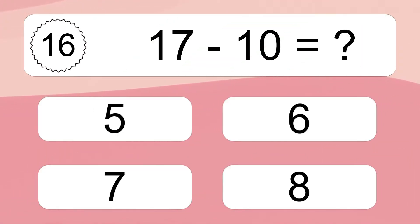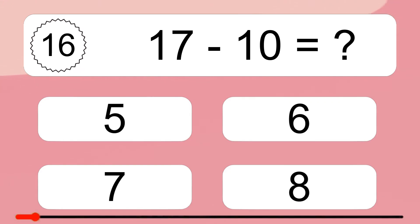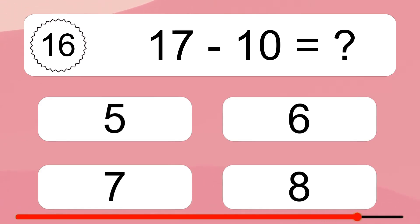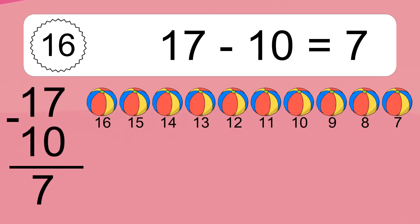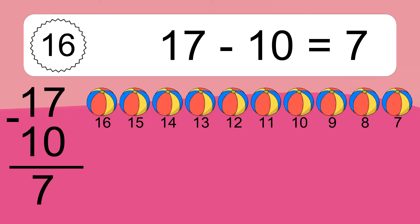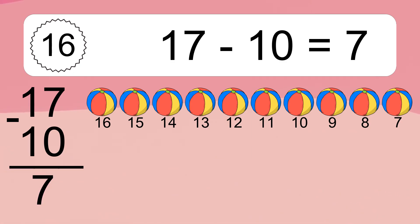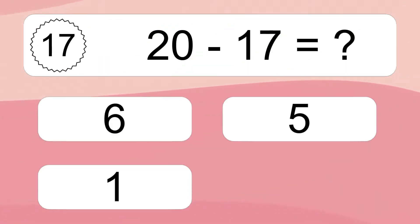17 minus 10 equals what? 17 minus 10 equals 7. Let's count it. 16, 15, 14, 13, 12, 11, 10, 9, 8, 7. 20 minus 17 equals what?